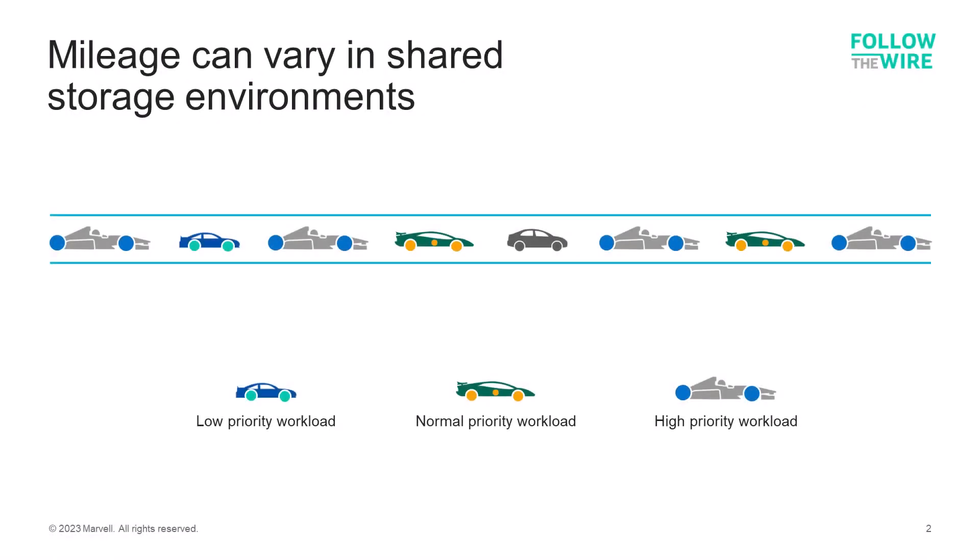Let's start by talking about workloads and shared storage environments. In the storage network, the connections between host switches and storage ports are essentially single-lane highways. When workloads share the same connection from a host port to a switch port, the performance of one workload can impact others — just like slow-moving cars can impede faster cars on the street.